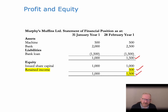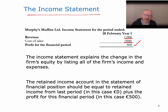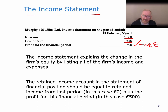In the income statement for Murphy's Muffins, we sold 1,000 euros worth of muffins and they cost us 500, so profit for the financial period is 500. That profit gets transferred into the statement of financial position through retained earnings, and that is what balances the statement of financial position.